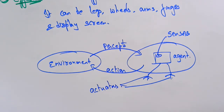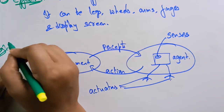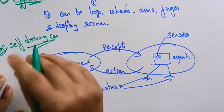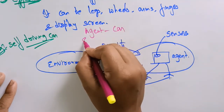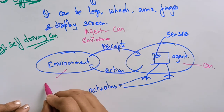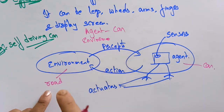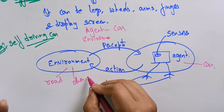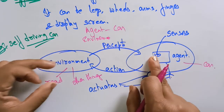Let me explain all these terms using the self-driving car example. In the self-driving car, the agent is the car. What about the environment? The environment is the road the car is traveling on, the nearby cars, and other things present on that road. Everything comes under the environment. The car is observing the environment — it is able to observe everything around it.